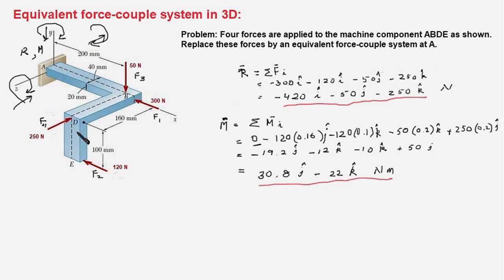Now, we turn to force F4. F4 intersects X axis and therefore has no moment about X axis. It is parallel to Z axis and therefore it does not have any moment about the Z axis. But it has moment about the Y axis and that will be in this direction like this. And therefore, it will be like this.